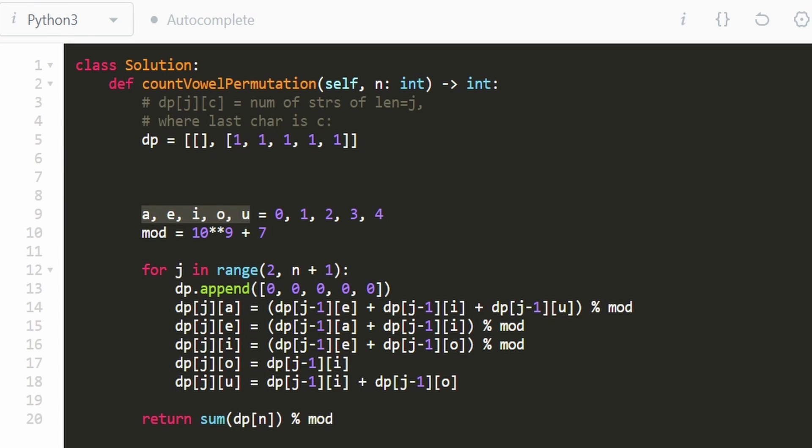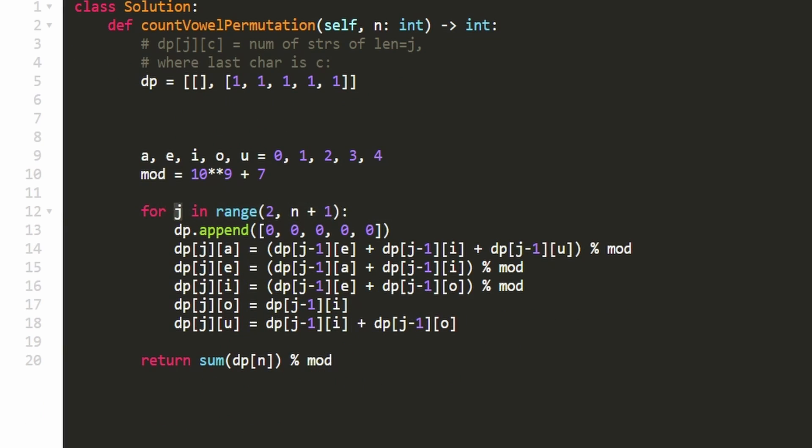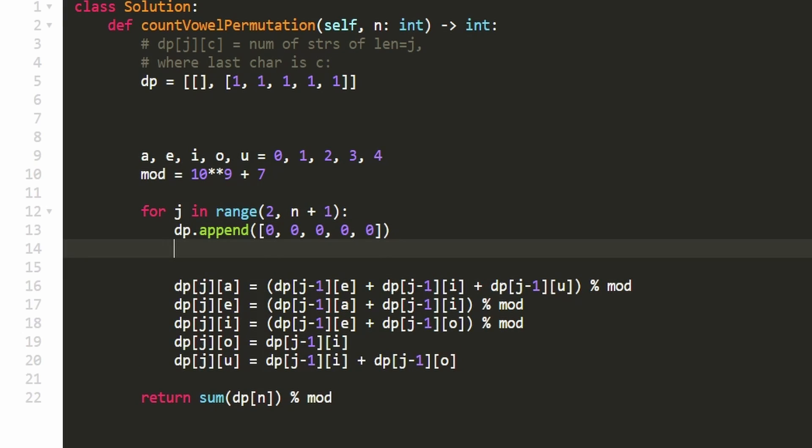But this is all the strings of length one. I've mapped each of the vowels to an index. So a maps to the zeroth index, e maps to the first index, etc. For each of the characters, we have just a single string of length one. Now in the problem statement, they say that the number could end up being really big. So we have our mod constant defined. And as we compute the number of permutations, we're going to be modding it by this constant. So now we're going to start looping, we're going to start at j equals two and keep going until we reach n. And j remember represents the length of the string. So initially, what I'm doing here is just appending an array of five dummy values, I'm just initializing them to be zero. So this is where we're going to put the number of strings of length two, that end with an a are going to go in this spot, that end with an e are going to go in this spot, here i, here o, and here u.